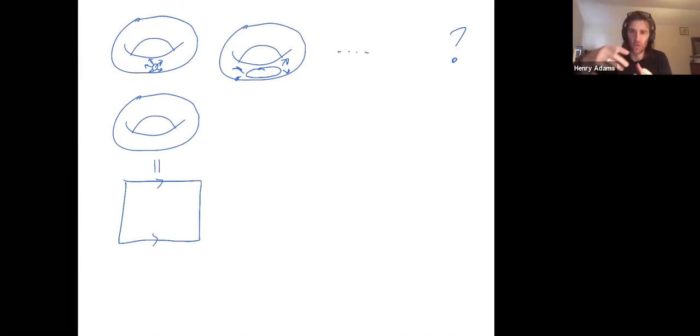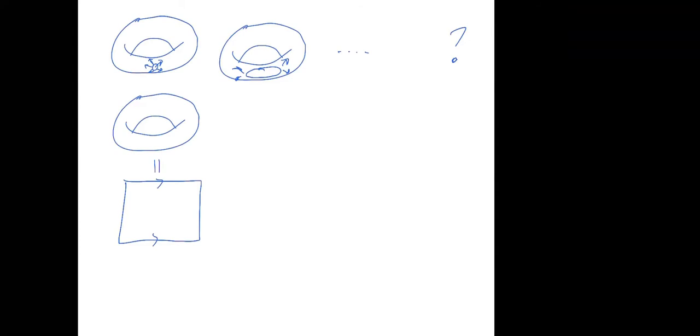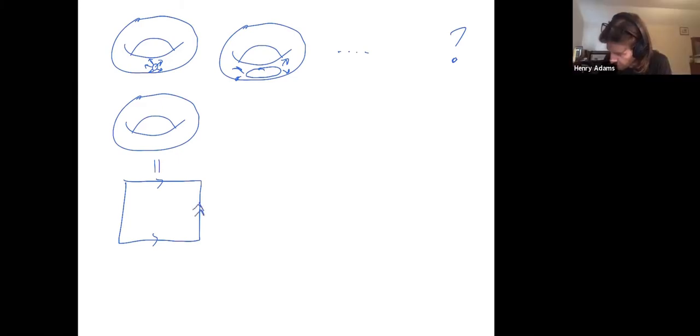And then, so what do I get when I identify the top with the bottom? I get a cylinder. And then once I have a cylinder, I identify the right side with the left side to get a torus. So once I've identified the top with the bottom, I identify the right side with the left side.